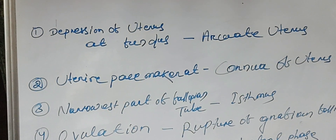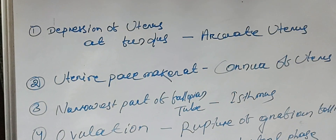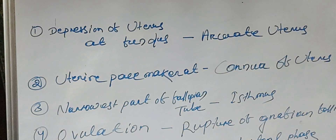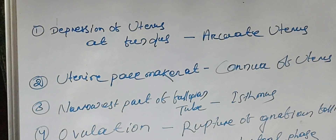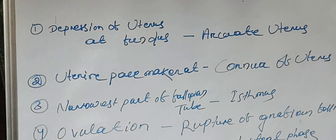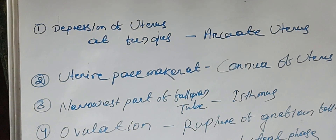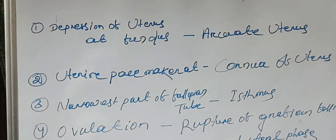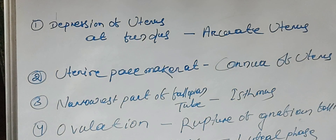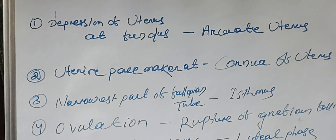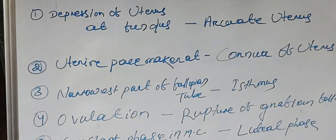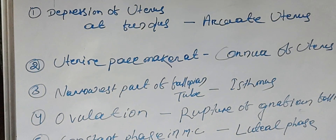Today we will learn some important points from anatomy and physiology. Depression of the uterus at the fundus is arcuate uterus. The uterine pacemaker is situated at the cornua of the uterus. The narrowest part of the fallopian tube is the isthmus.